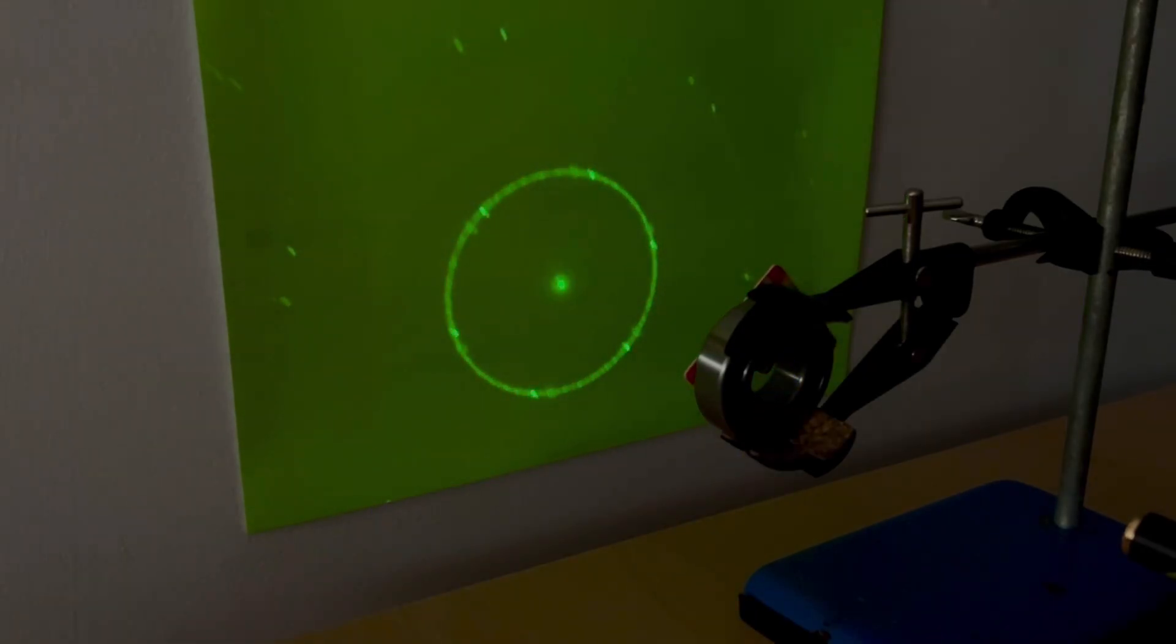The circular pattern persists on the glow-in-the-dark film for a while after you switch off the violet laser.